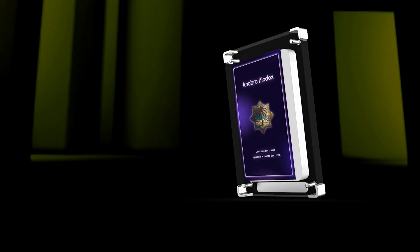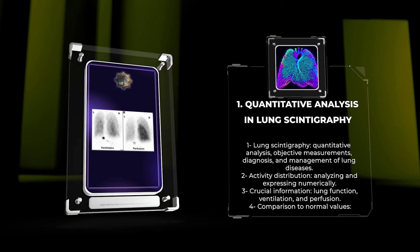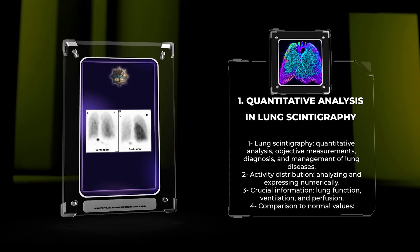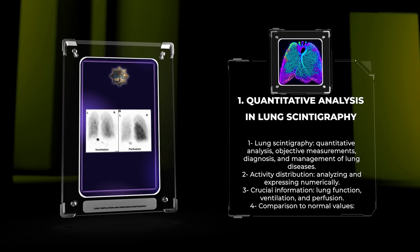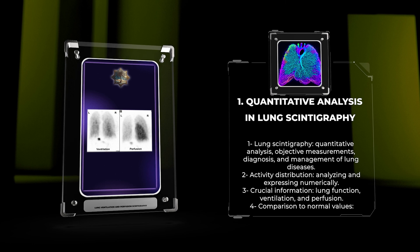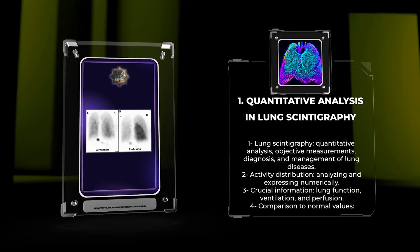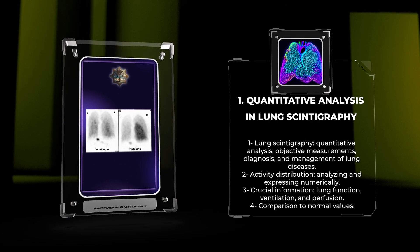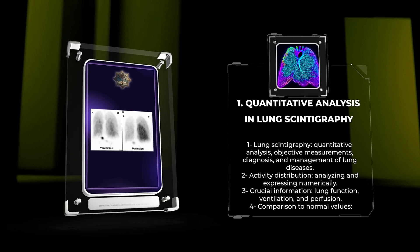One of the fundamental aspects of lung scintigraphy is the ability to perform quantitative analysis, providing objective measurements that aid in the diagnosis and management of lung diseases. This method involves analyzing the activity distribution in the lung and expressing it numerically. By employing specialized software and advanced algorithms, radiologists can obtain crucial information about lung function, ventilation, and perfusion. These quantitative parameters can then be compared to normal values, allowing for accurate assessment and monitoring of various pulmonary conditions.